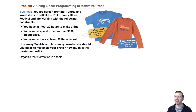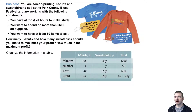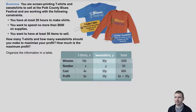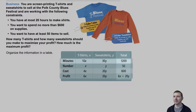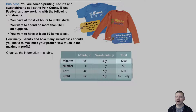Next, organize the information in a table. We have a column for t-shirts (x), sweatshirts (y), and total. For the minutes row, the number of minutes to create t-shirts is 10x, for sweatshirts it's 30y, and the total number of minutes available is 1200 — since you have at most 20 hours to make the shirts.